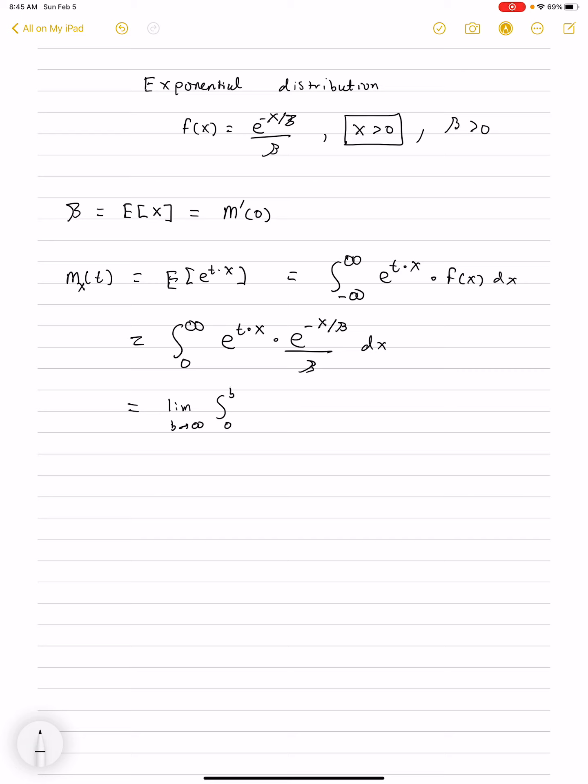And I'll combine the exponential functions. So they each have an exponent, one of t to the x, the other one minus x over beta. Now, they add, and they each have a factor of x. So let's factor that x out. This will be x times t minus 1 over beta. Now, we'll put the dx here, and the division by beta will put in front of the integral because it's a constant.